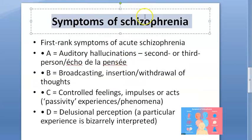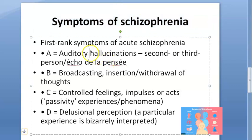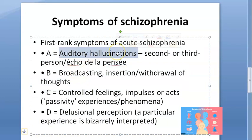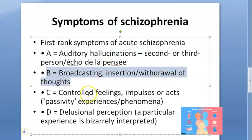Now the first-rank or trunk symptoms: A, B, C, D. First is auditory hallucinations - they can hear somebody talking to them, voices in their mind, voices in their head. Next is broadcasting, insertion, or withdrawal of thoughts - somebody is inserting thoughts into their mind.